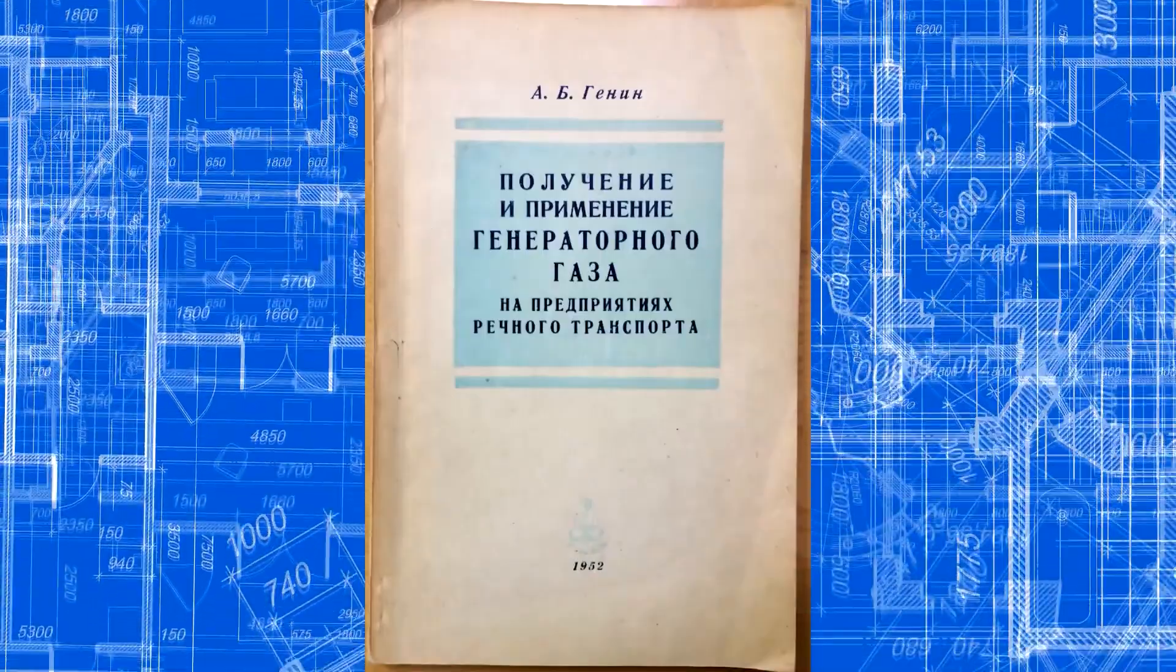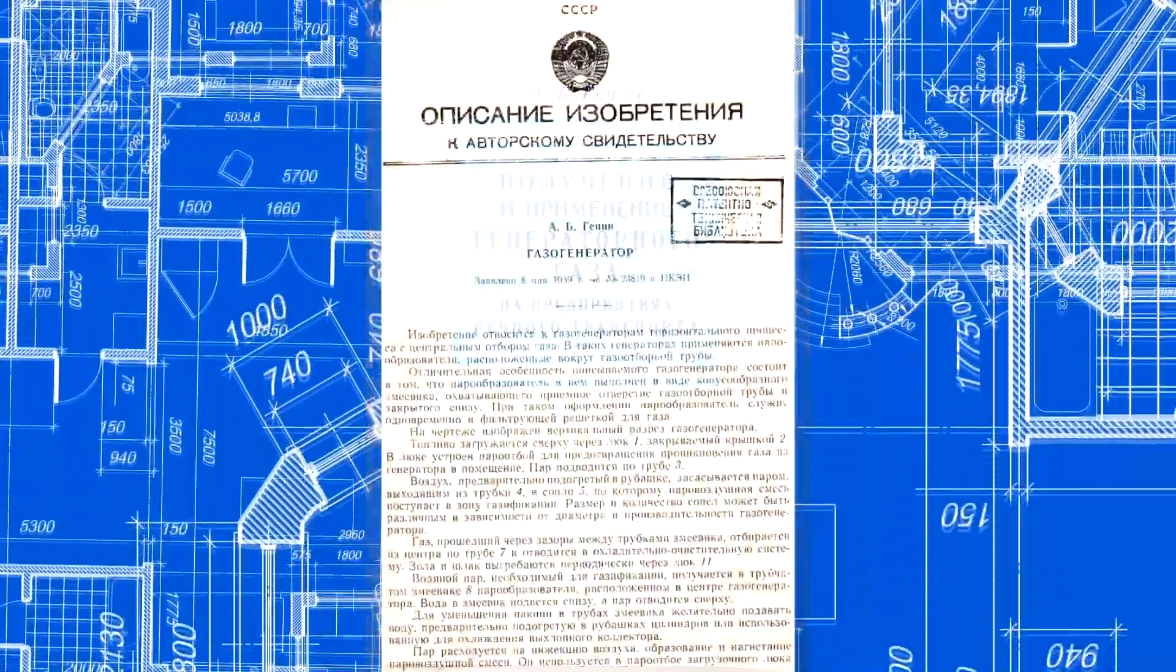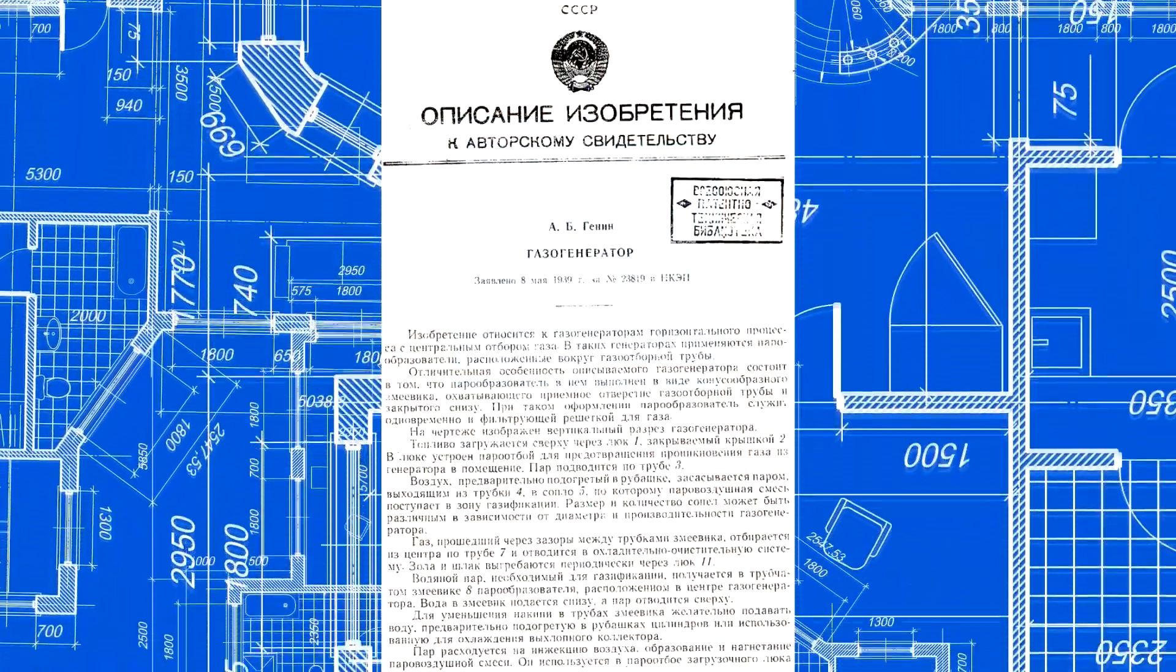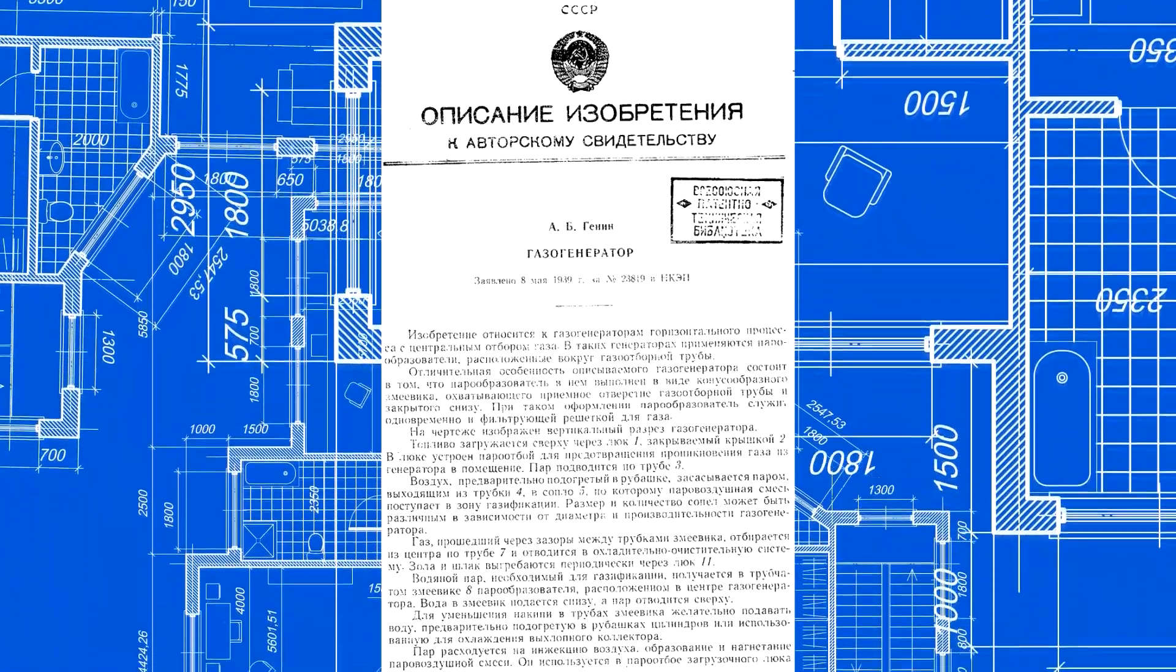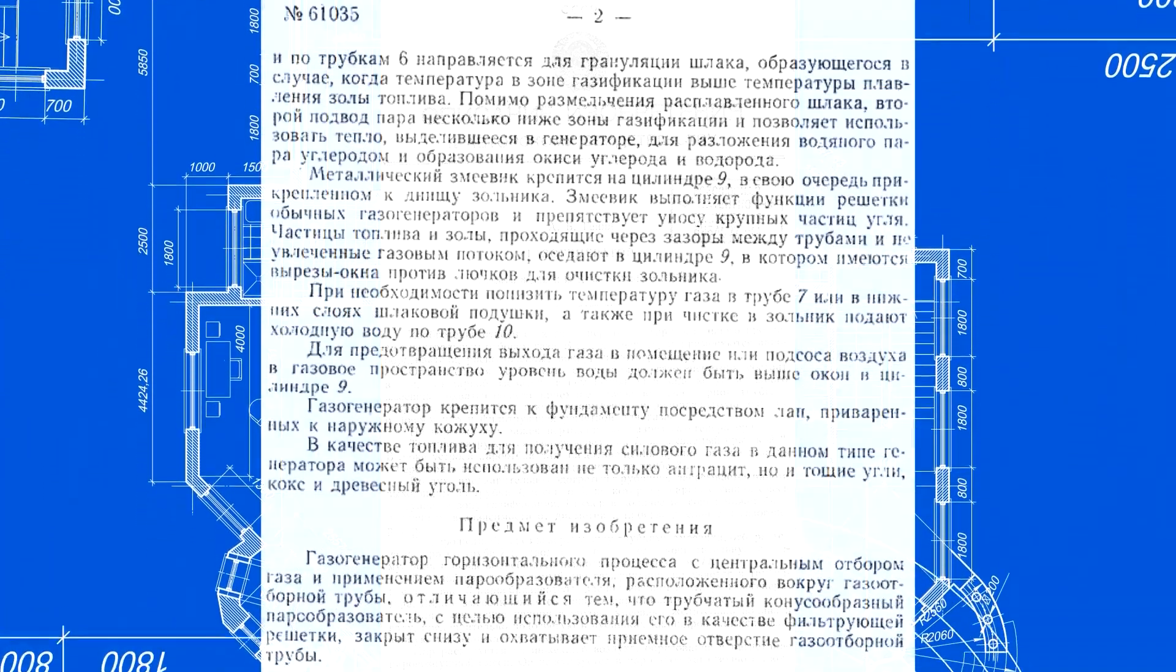He didn't just repeat the same things from book to book, as, for example, Ginsburg did. Now let's look at how he attempted to modify the transverse gasifier in order to heat the steam inside the gasification chamber. He filed his patent on May 8, 1939.